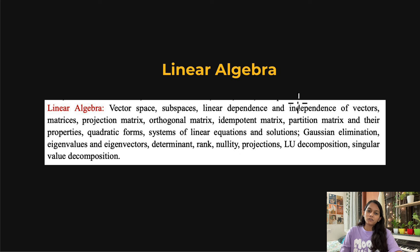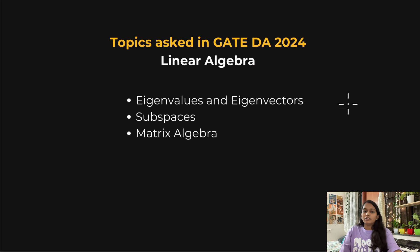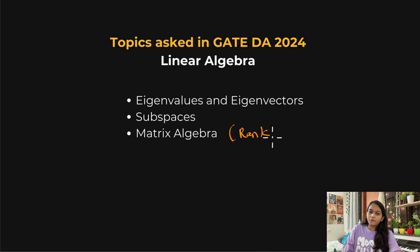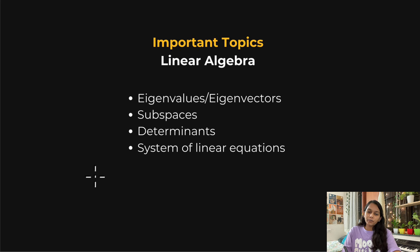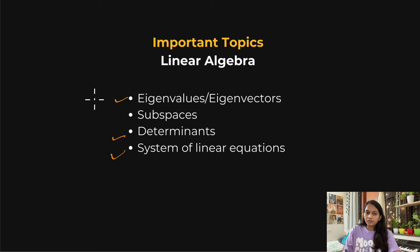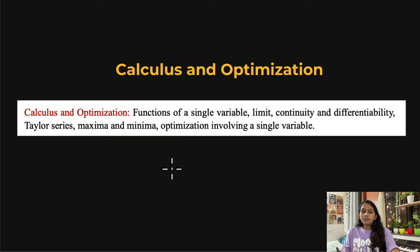For linear algebra, these are the topics from the official GATE syllabus. In GATE DA 2024, questions were asked from eigenvalues, eigenvectors, subspaces, determinants, and system of linear equations. For GATE CSE aspirants also appearing in GATE DA, the common topics are eigenvalues, eigenvectors, determinants, and system of linear equations. Subspaces is something you need to cover separately for GATE DA. Among these, eigenvalues, eigenvectors, determinants, and system of linear equations are all easy topics.